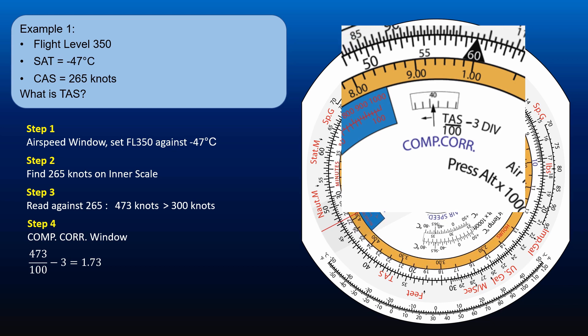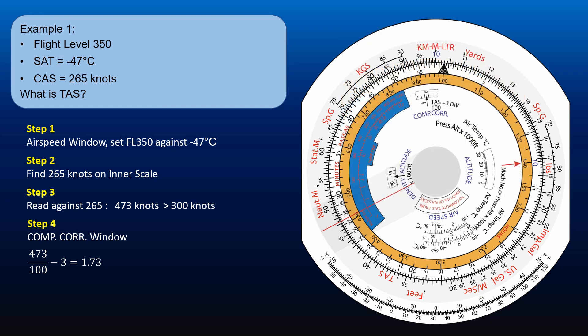You have moved the inner scale to the left, altering the relationship between CAS and TAS, correcting it for compressibility.